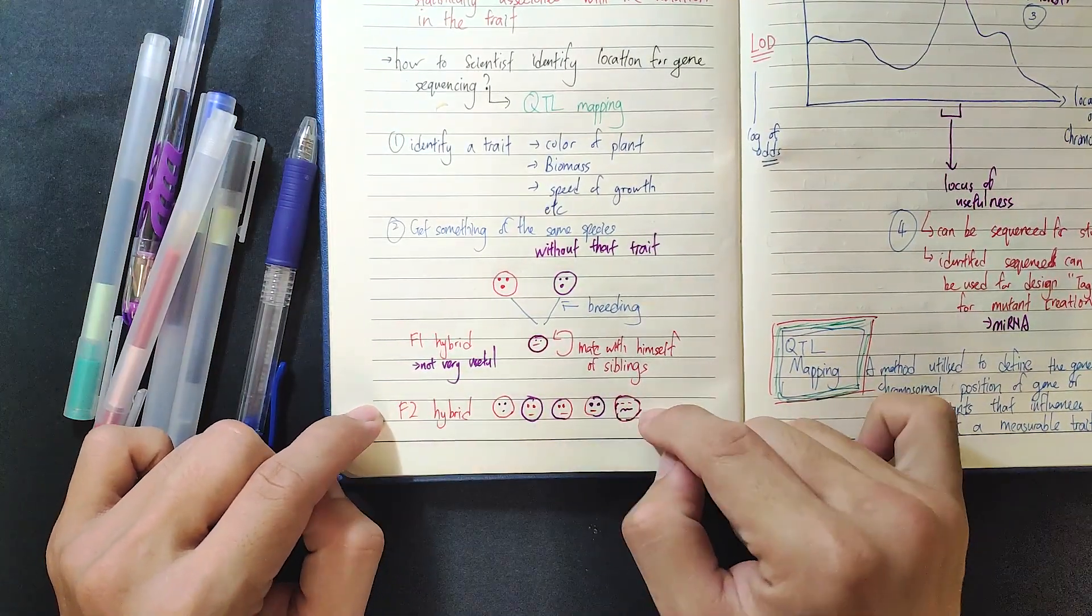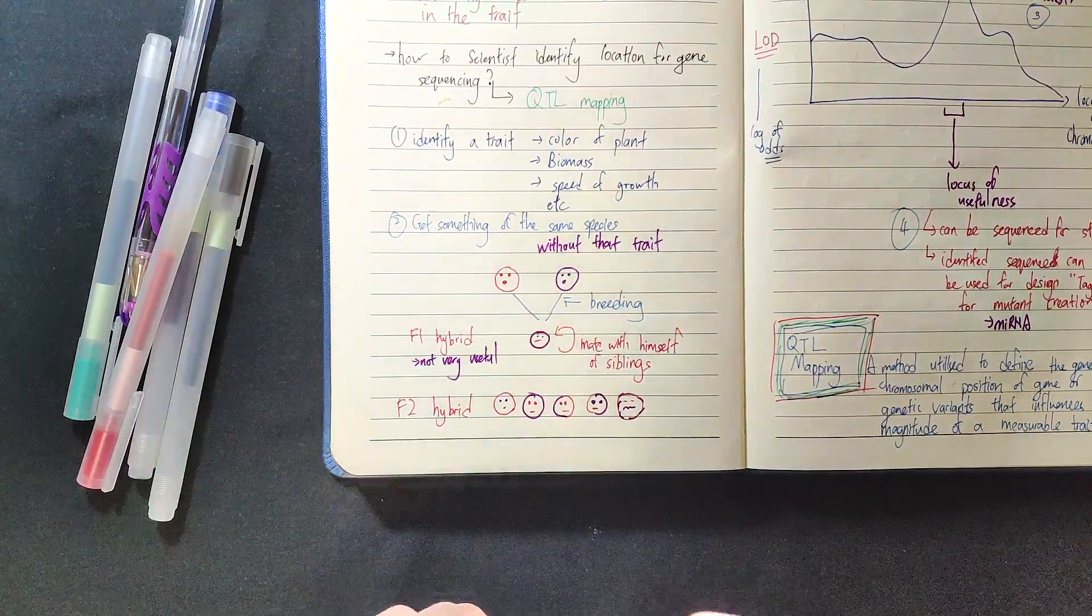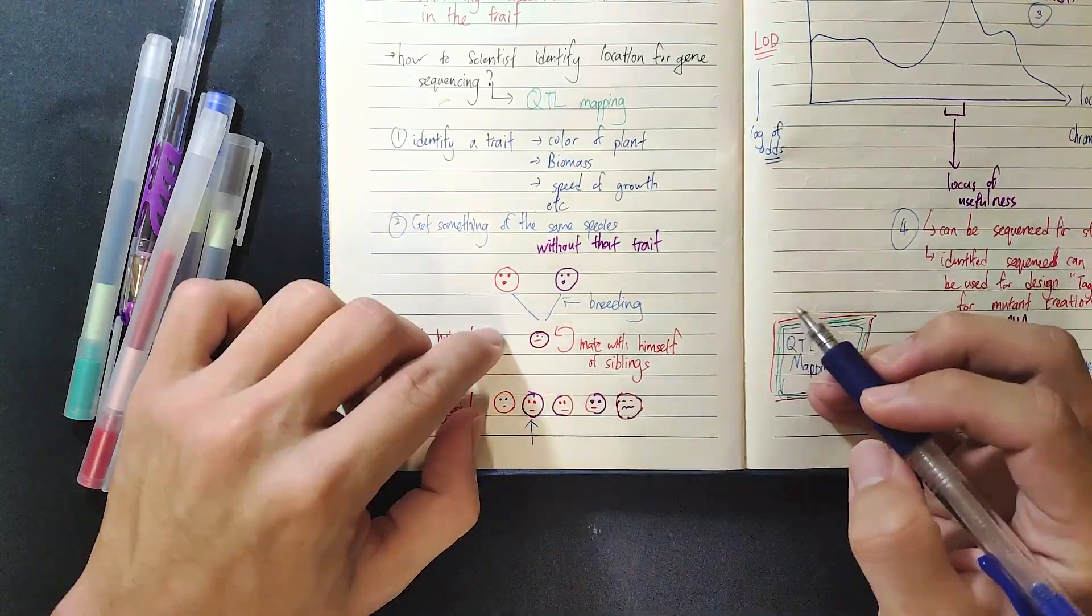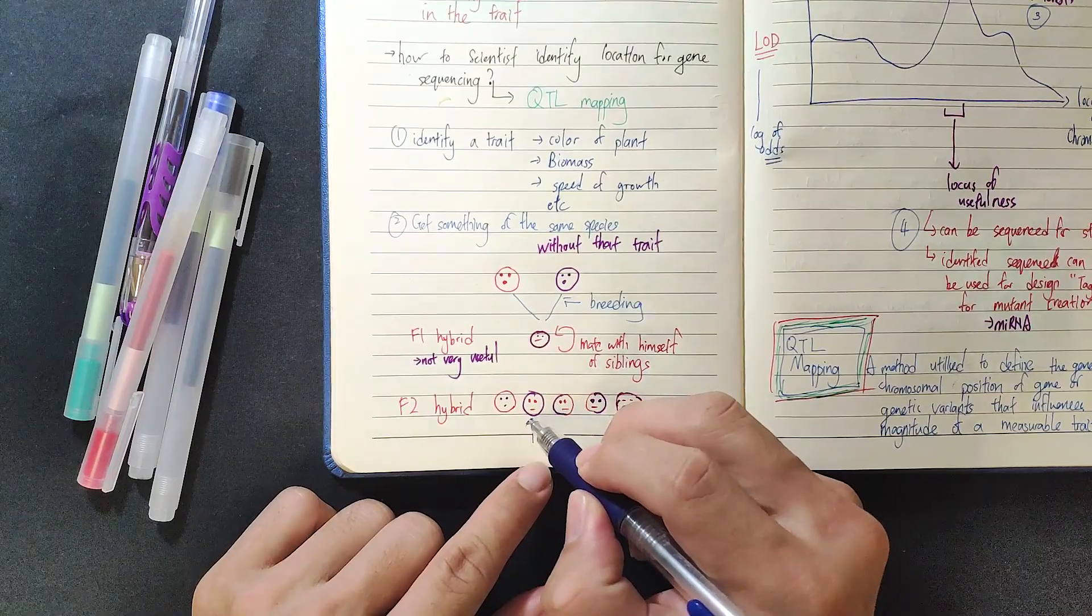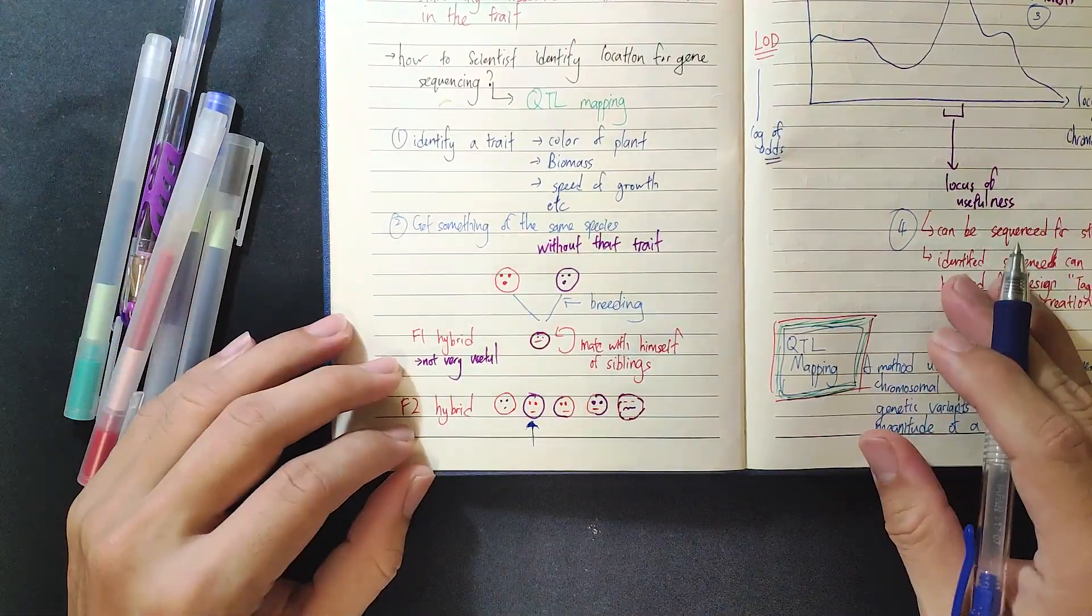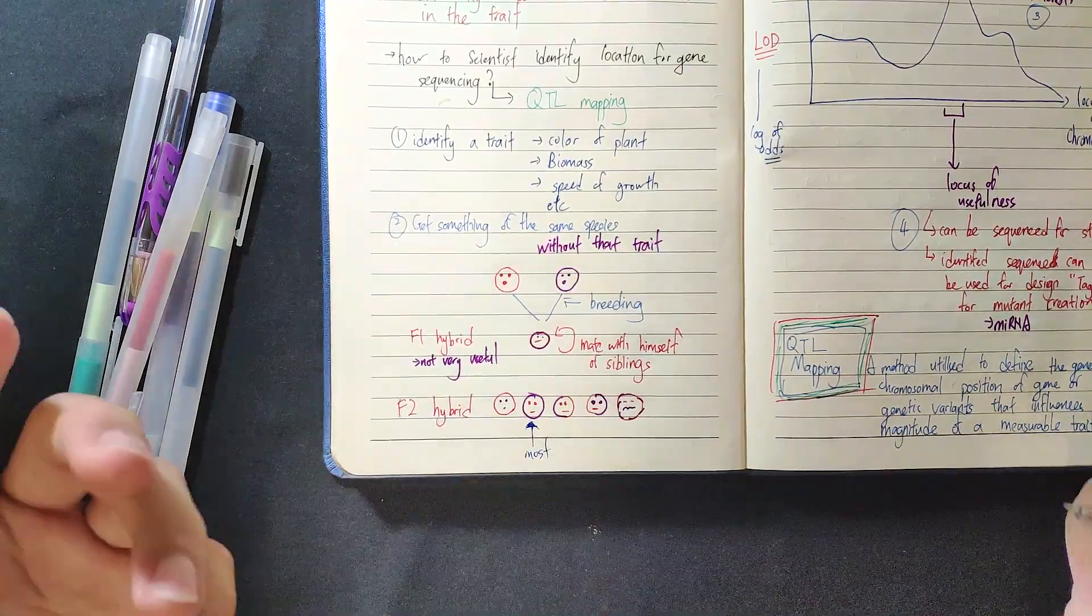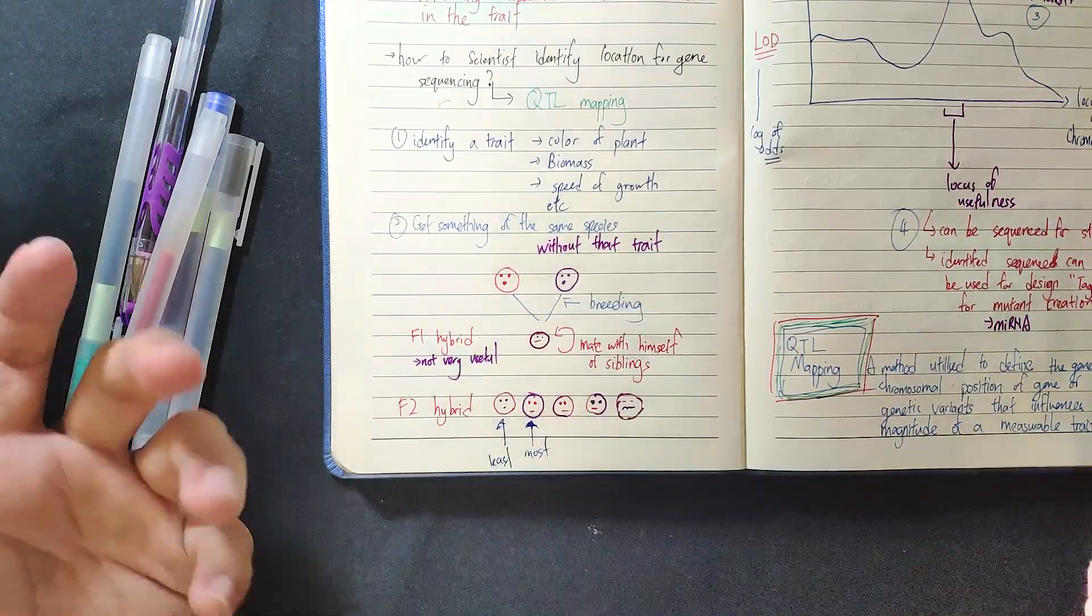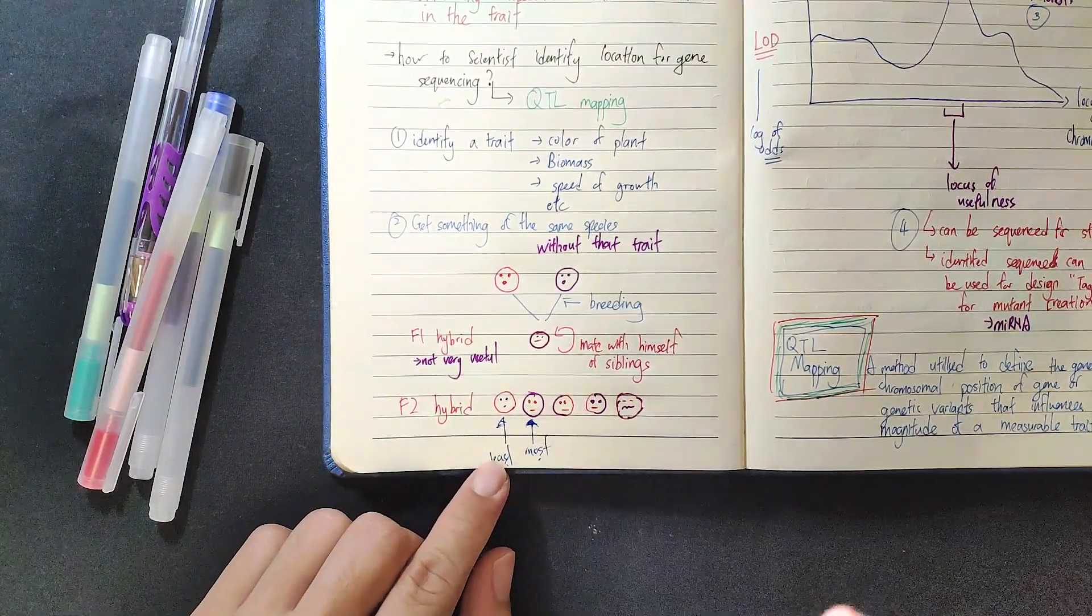Okay, so from this F2 hybrid, then we can start to observe the color. So in this case, if we want, let's say we want this one. We want the mom features with that face outside of it. So this is the feature that we want to study. So you identify this is the one with the most amount of feature, and this is the one with the least amount of feature that we want to study.